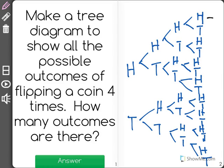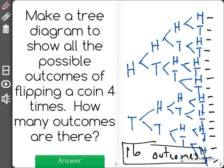Here, we have 1, 2, 3, 4, 5, 6, 7, 8, 9, 10, 11, 12, 13, 14, 15, 16 different outcomes that are possible when you flip a coin four times.